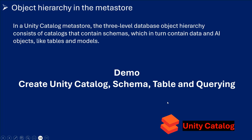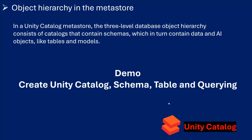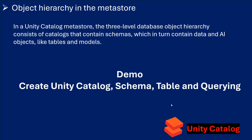Let's talk about object hierarchy in the Metastore. In Unity Catalog Metastore, the three-level database object hierarchy consists of catalogs that contain schemas, which in turn contain data and AI objects like tables and views.